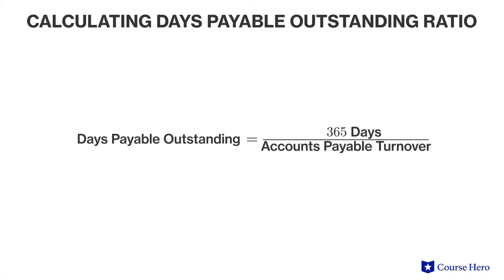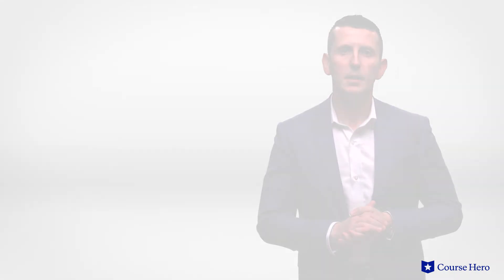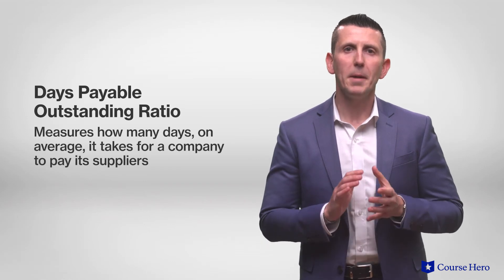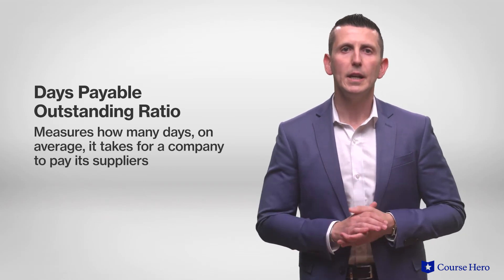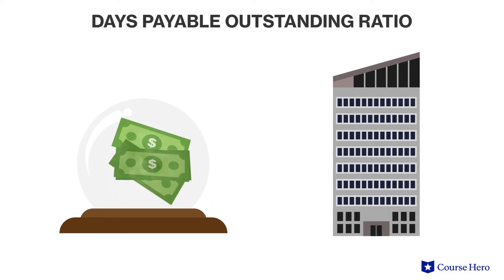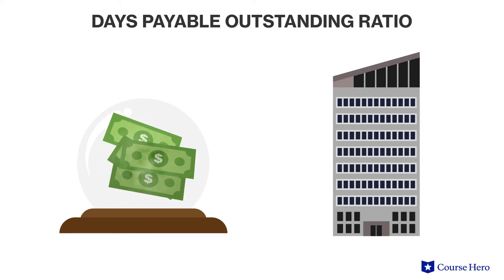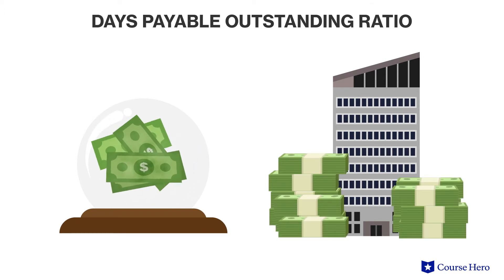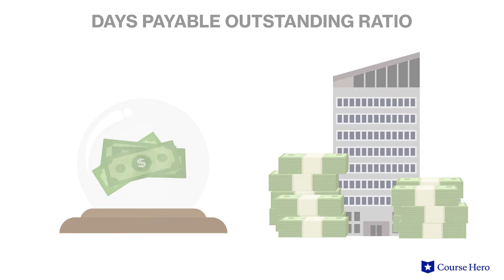Dividing 365 by the accounts payable turnover ratio yields the days payables outstanding ratio. The days payables outstanding ratio measures how many days on average it takes for a company to pay its suppliers. This can be a useful predictor of future cash flows and allows the organization to ensure that it has adequate cash on hand to meet upcoming obligations.